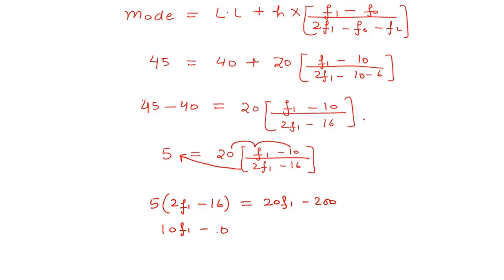Multiplying, so yes, it will be 10F1 minus 16 into 5 will give you 80. Then is equal to 20F1 minus 200. So yes, 10F1 ko right side le aate hai, to 20F1 me se 10F1 cancel ho jae ga, to 10F1 a jae ga.